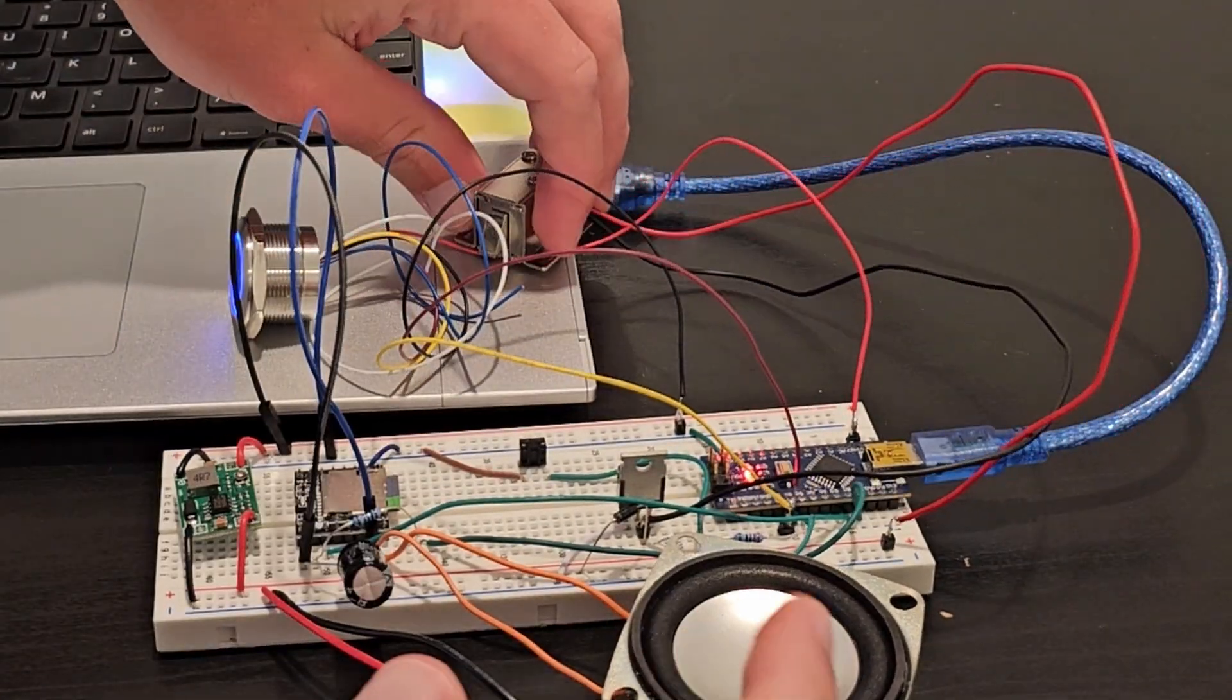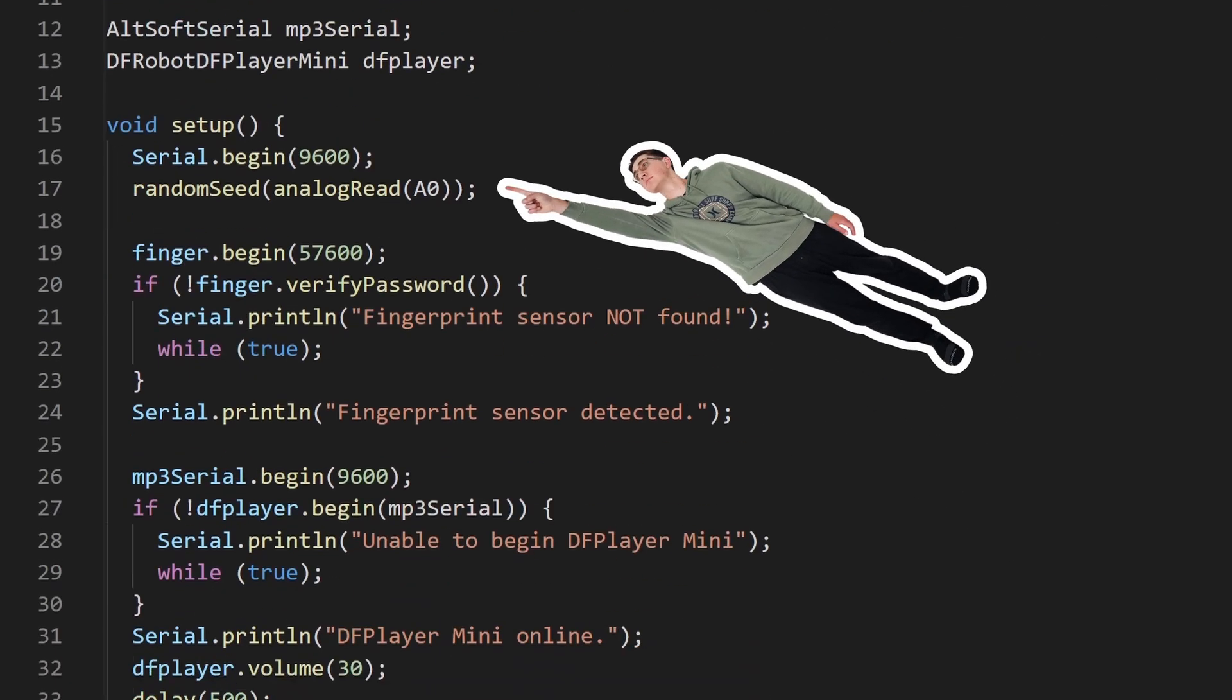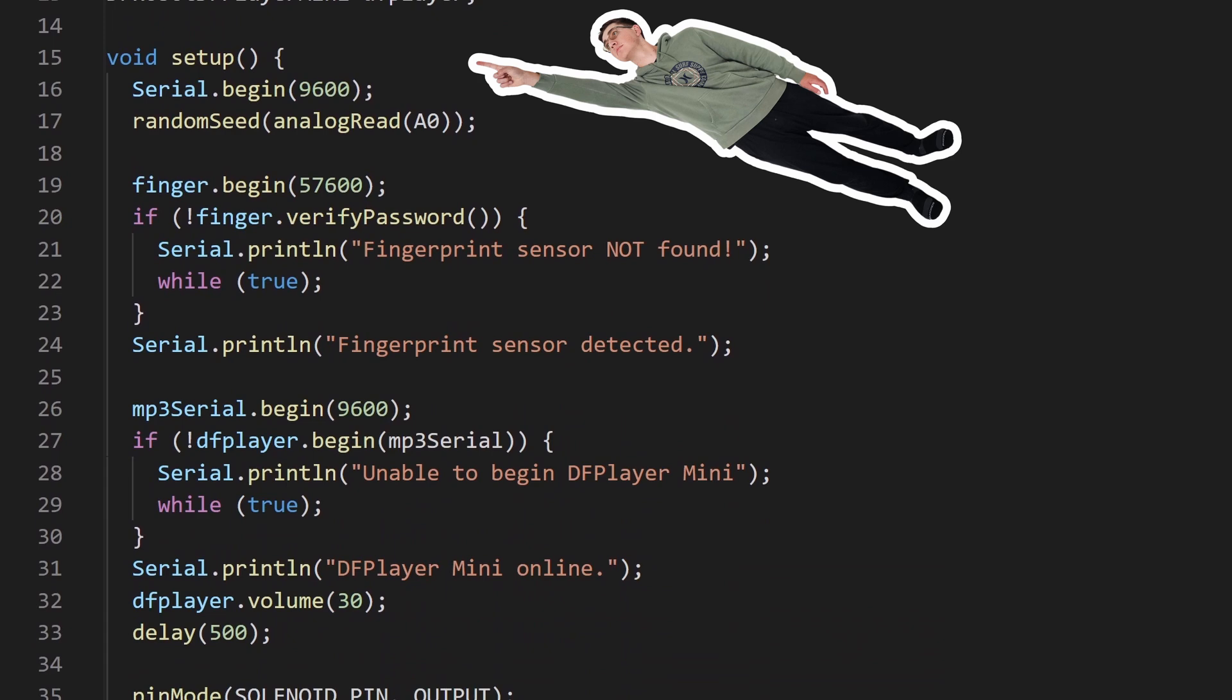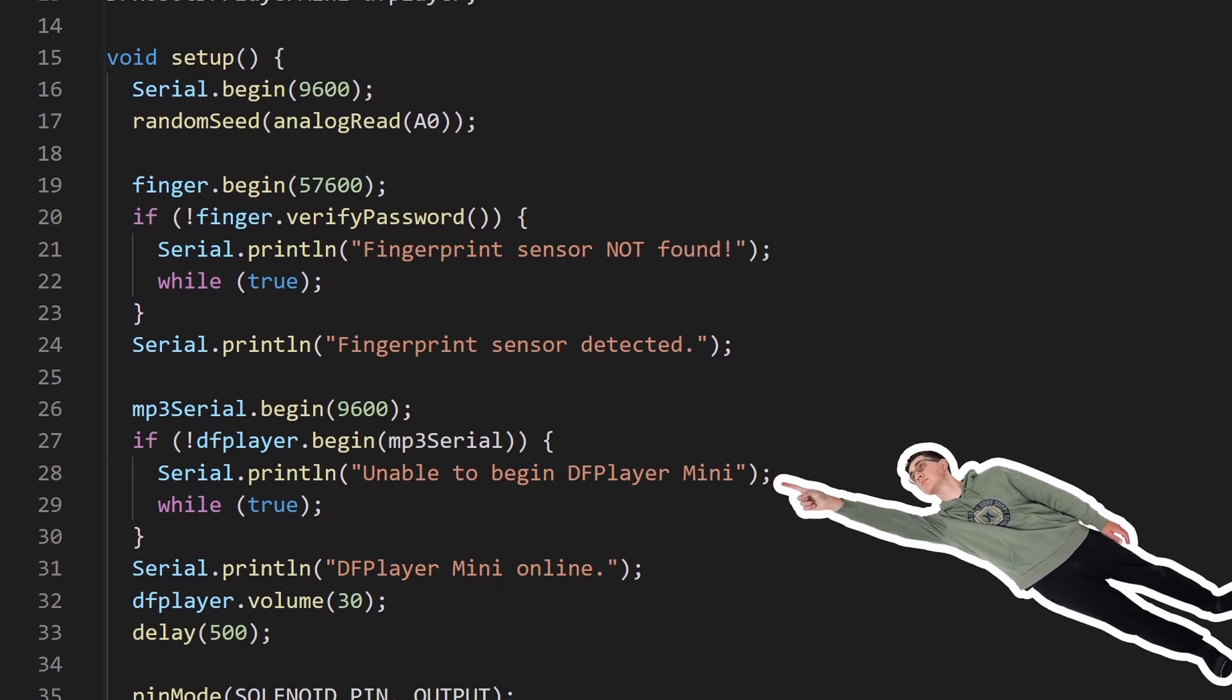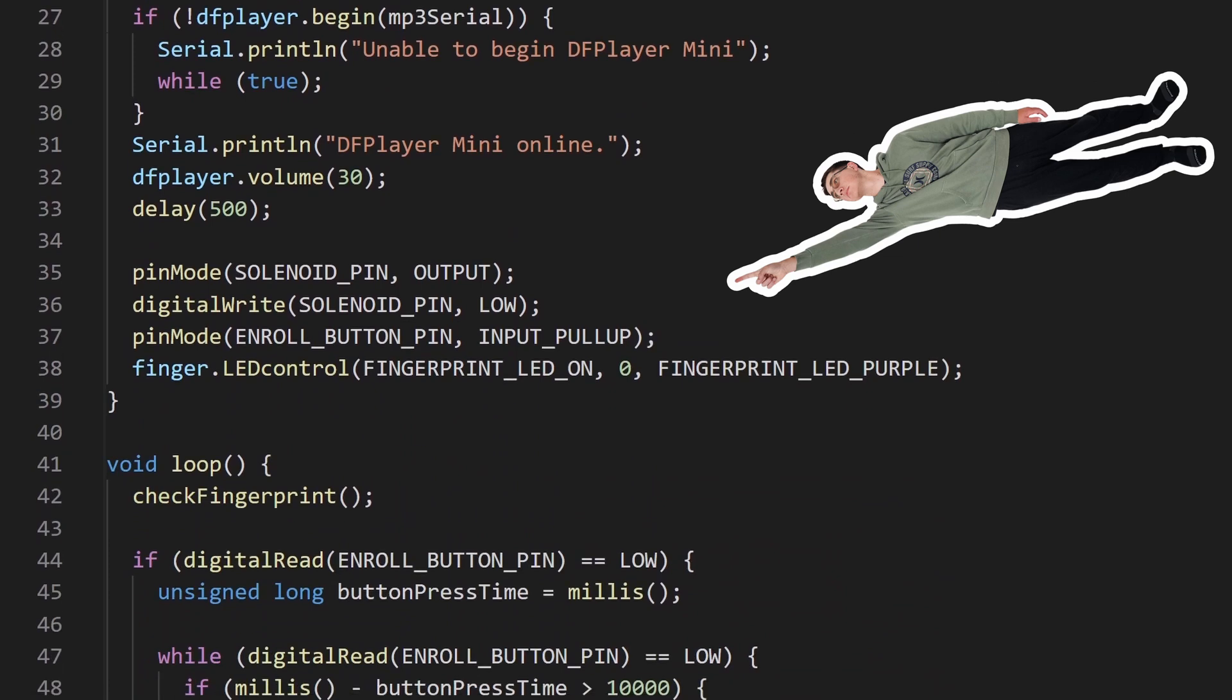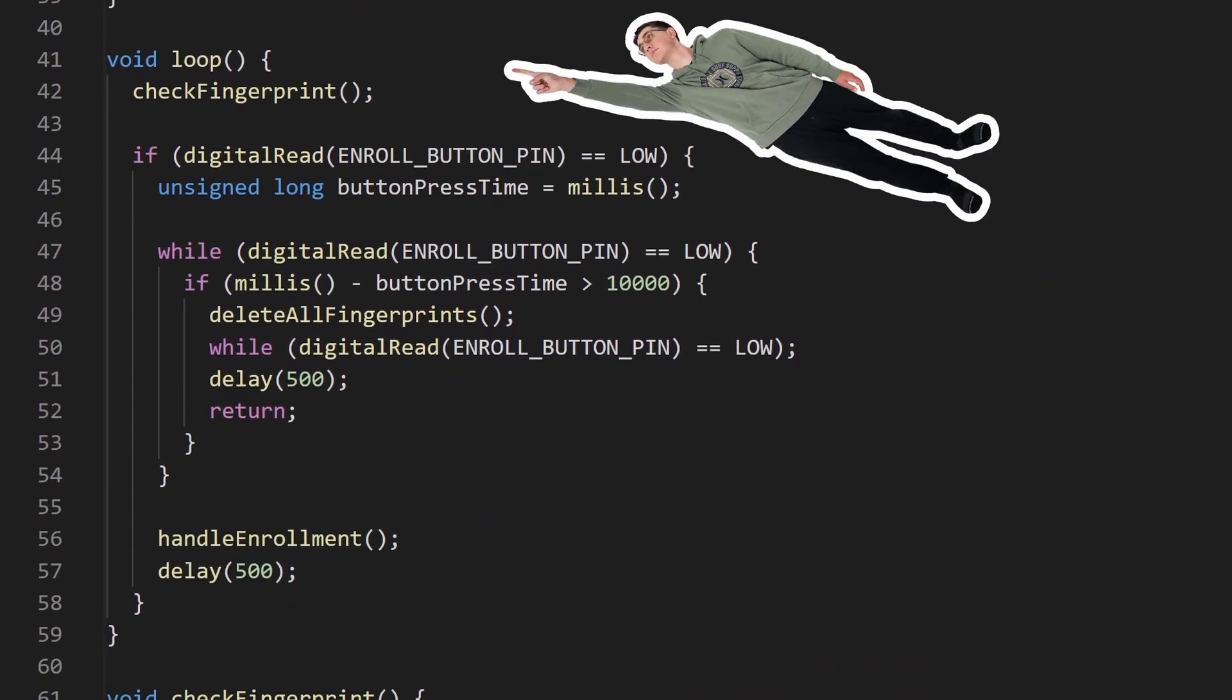Now let's walk through the code that's going to bring it all to life. First we can import any libraries we need and set up our global variables. Then we can move into the setup function, which only runs once when our device powers on. It initializes our communication channels with our fingerprint sensor and speaker, and it also sets up the pins for our enrollment button, which I added so that we can tell the system when we want to add new fingerprints, as well as the solenoid.